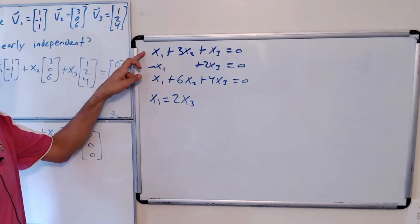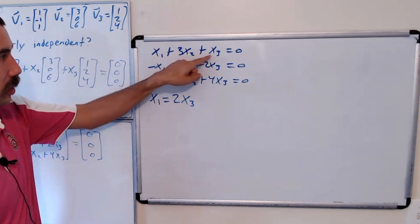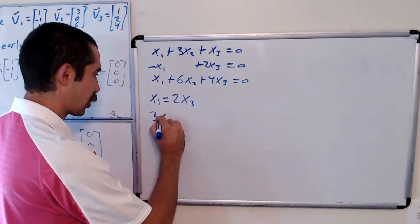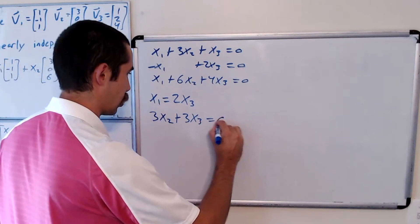So our new first equation would be 2x3 plus 3x2 plus x3 equals 0. That's the same thing as 3x2 plus 3x3 equals 0.